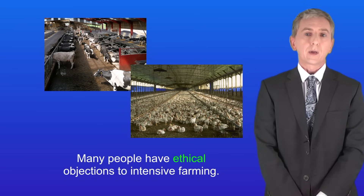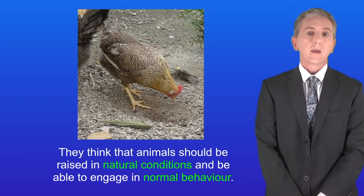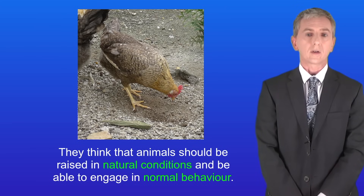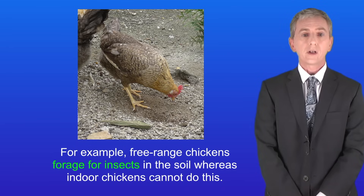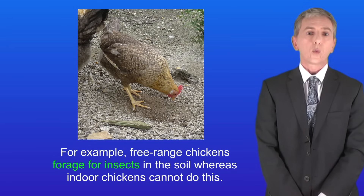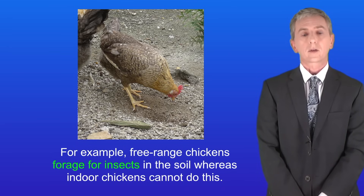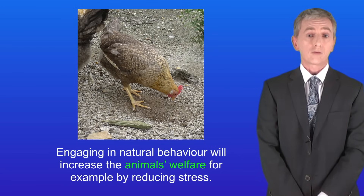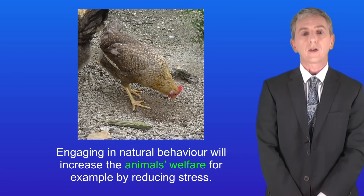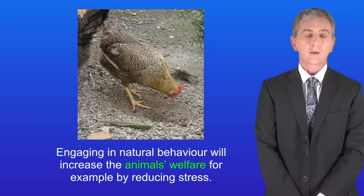Many people have ethical objections to intensive farming. They think that animals should be raised in natural conditions and be able to engage in normal behaviour. For example, free-range chickens forage for insects in the soil whereas indoor chickens cannot do this. Engaging in natural behaviour will increase the animal's welfare, for example by reducing stress.